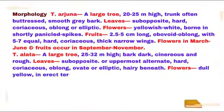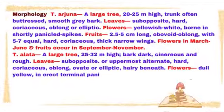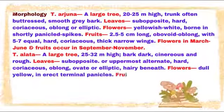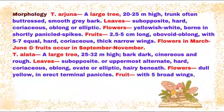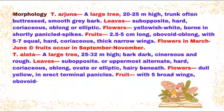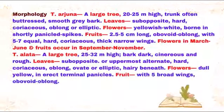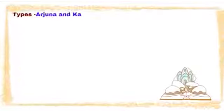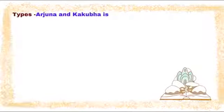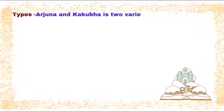Flowers are dull yellow, in erect terminal panicles. Fruits have 5 broad wings and are ovoid or oblong. Types: Arjuna and Kakuba are the two varieties of Arjuna.